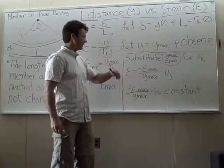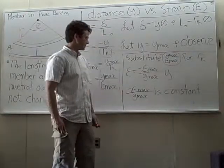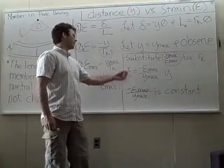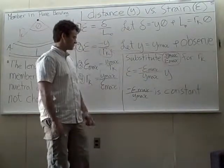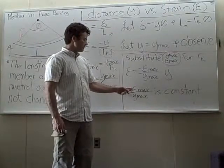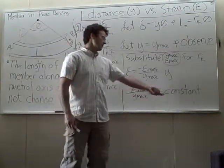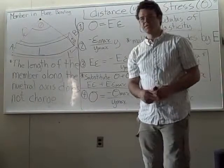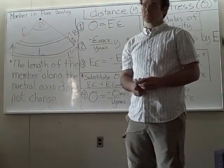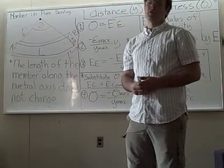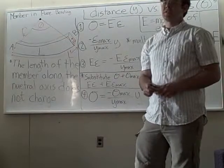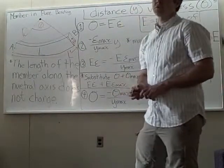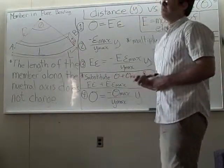So as our distance from the neutral axis changes, our strain is going to change. We now have strain in terms of the distance from the neutral axis — our strain is proportional to our distance from the neutral axis. And epsilon_max over y_max is constant. Only after developing our distance versus deformation and distance versus strain equations does it make sense to develop our distance versus stress relationship, and now we have the tools required to do that.